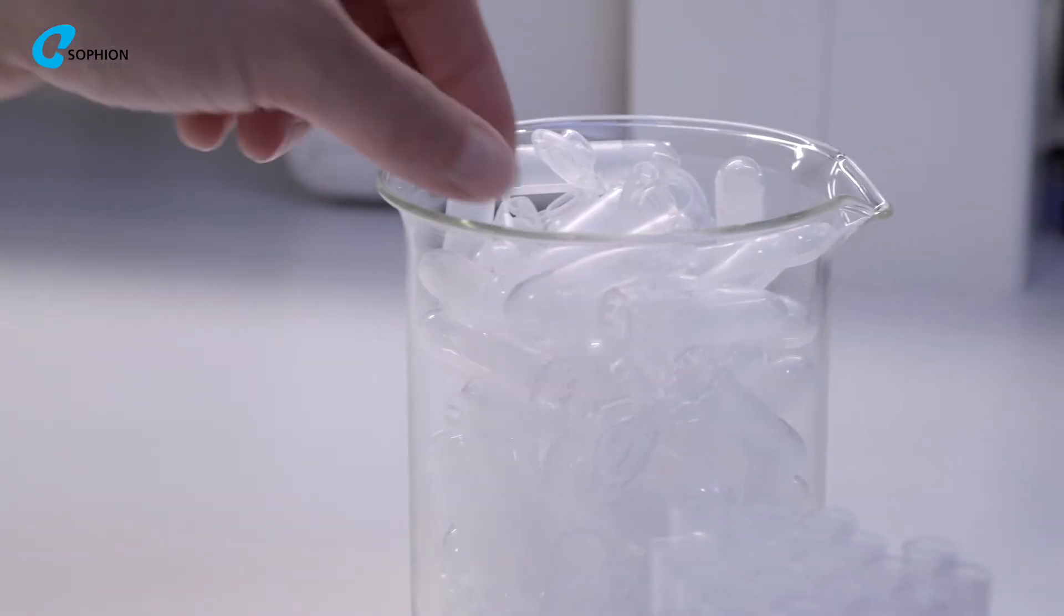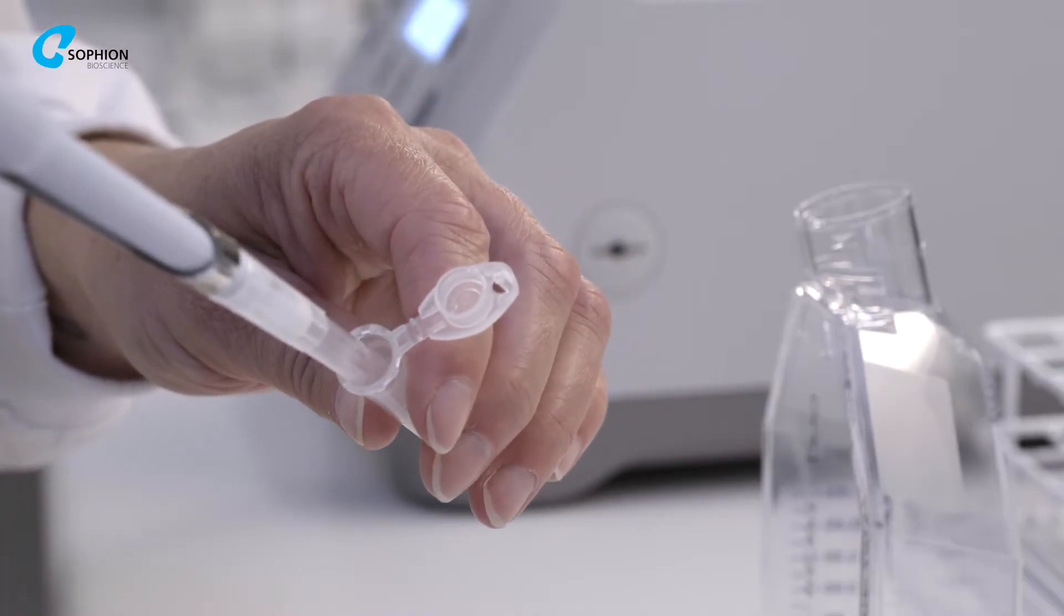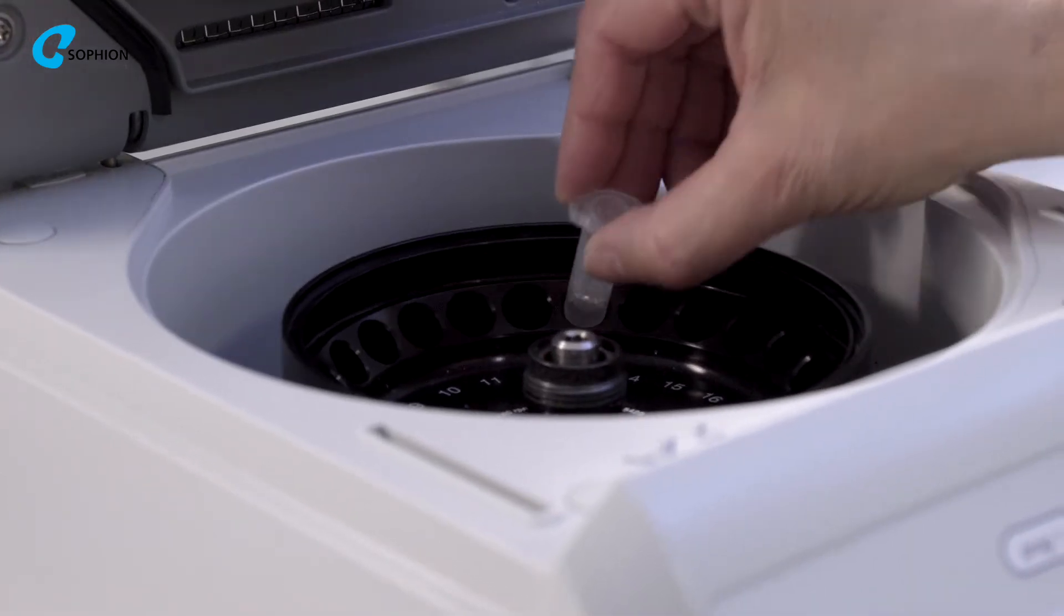Start by adding 0.5 milliliters of cells suspended in serum-free medium to an Eppendorf tube and spin down the cells in a centrifuge.